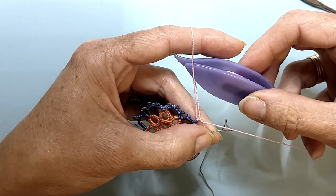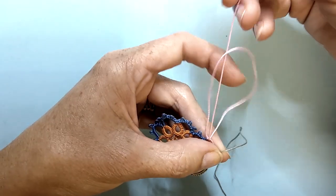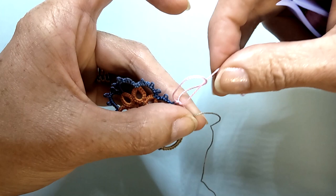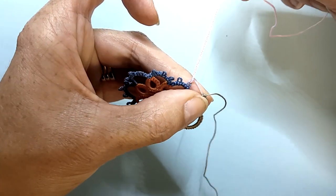Pass the shuttle through loop 2 and pull it down to create the second half of our stitch.